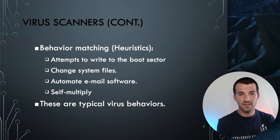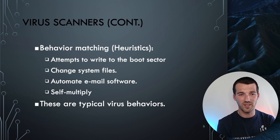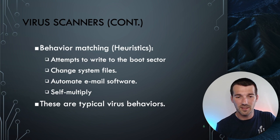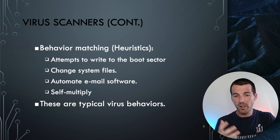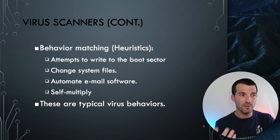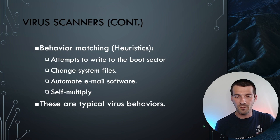For heuristics-based detection, examples of odd behaviors include: automating email, changing system files, changing permissions, writing to places they shouldn't. We talked about the boot sector — a popular way to root into a system in rootkit style. Detection engineering is a whole field, and indicators of compromise — the behaviors of malware — are the type of things people in security share with each other to tune tools to find specific malicious behavior.